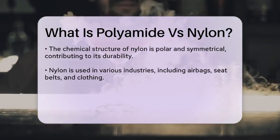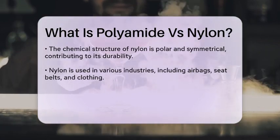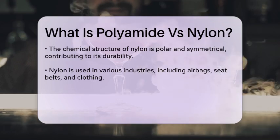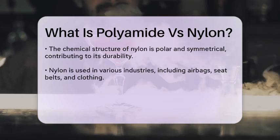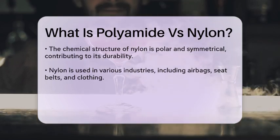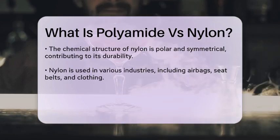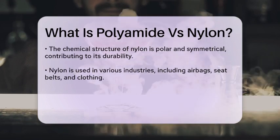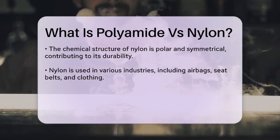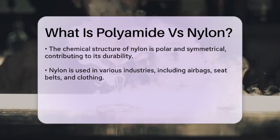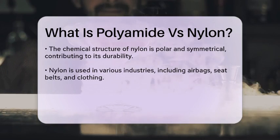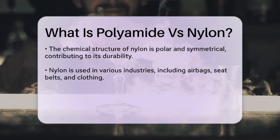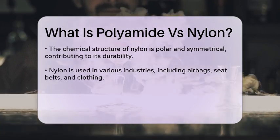Nylon is widely used in various industries due to its excellent mechanical properties. You'll find nylon in products like airbags, seatbelts, parachutes, and even clothing like lingerie and swimwear. It's also used in machine parts, electrical insulation, and more.